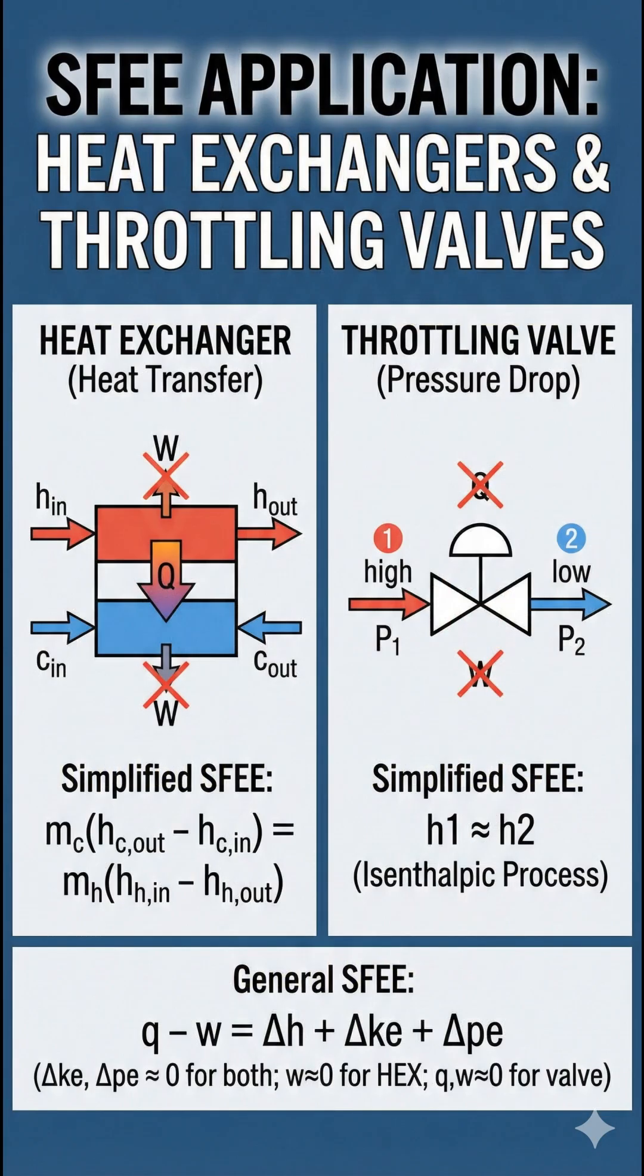Heat Exchangers and Throttling Valves. This final image covers heat exchangers, where the main process is heat transfer between two fluids, and throttling valves, which cause a significant pressure drop at constant enthalpy, H1 equals H2, known as an isenthalpic process.